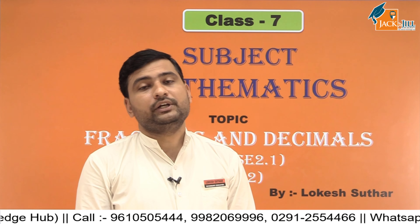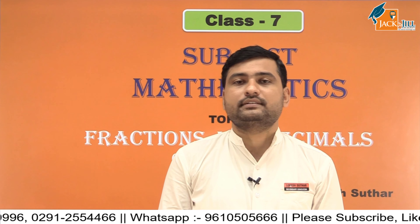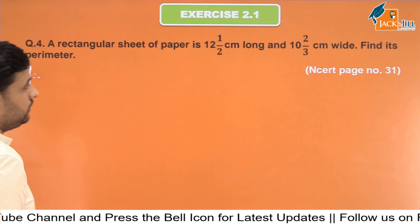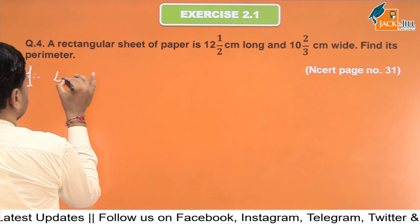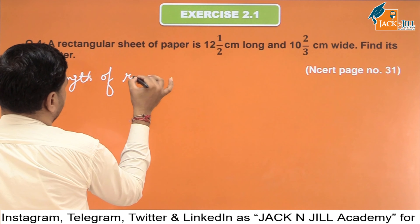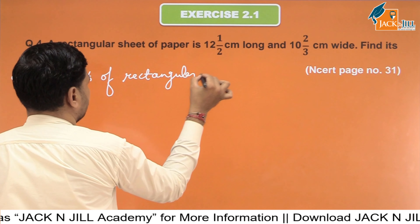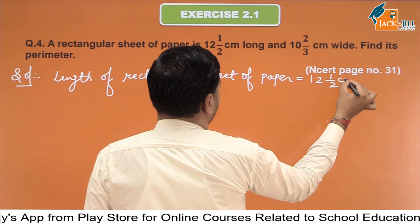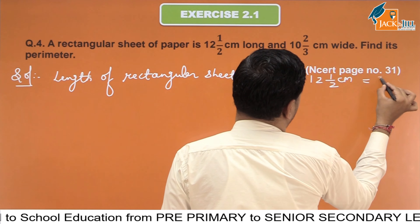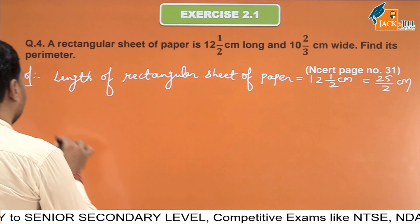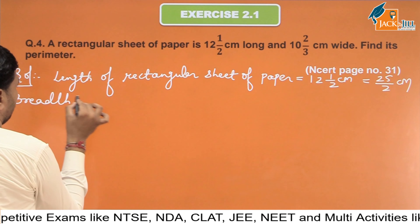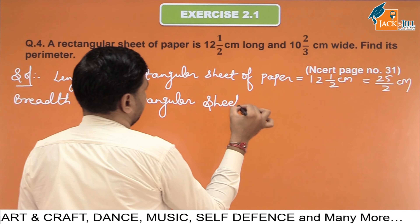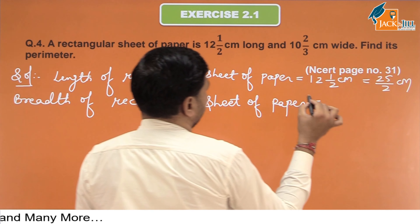In the last class, we completed 3 questions of Exercise 2.1. Now today we will start question number 4. A rectangular sheet of paper is 12 and 1/2 centimeter long and 10 and 2/3 centimeter wide. We will find the length: breadth is 10 and 2/3 centimeter. We solve the mixed fraction: 12 and 1/2 gives 25/2 centimeter. Now width, that is breadth, is 10 and 2/3, which gives 32/3 centimeter.